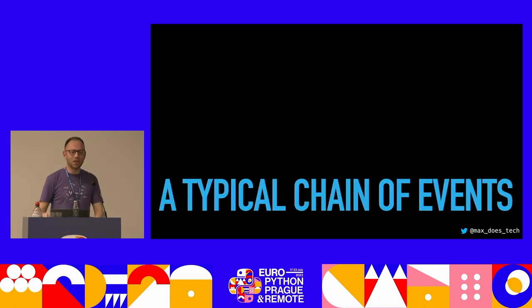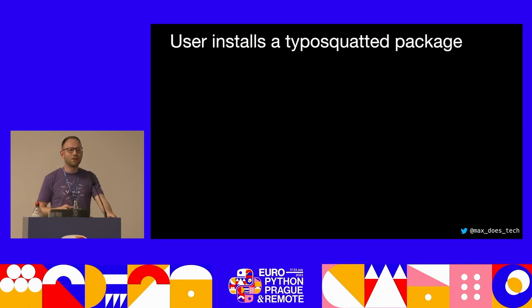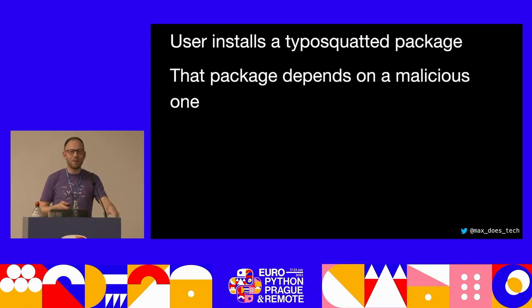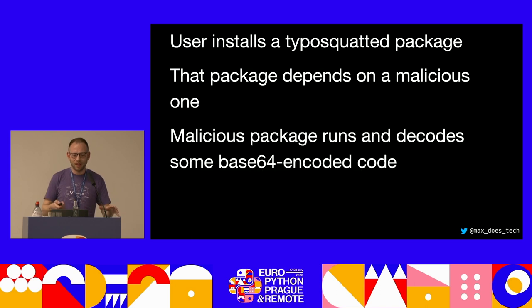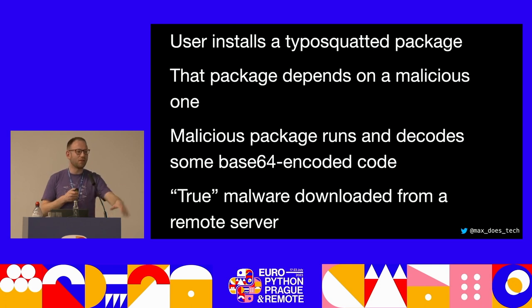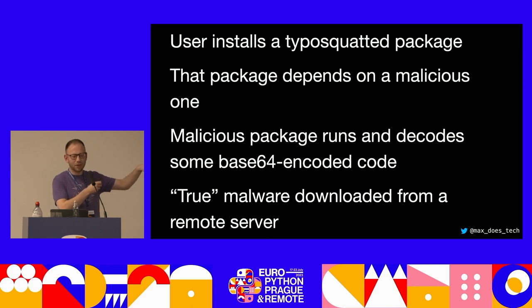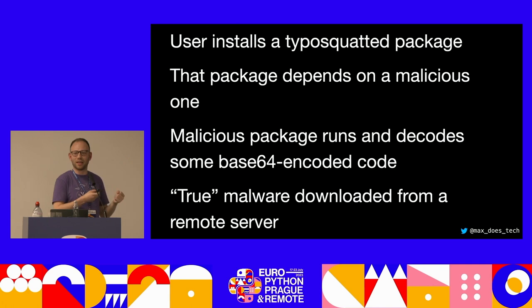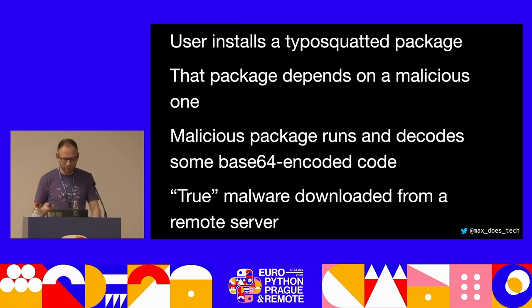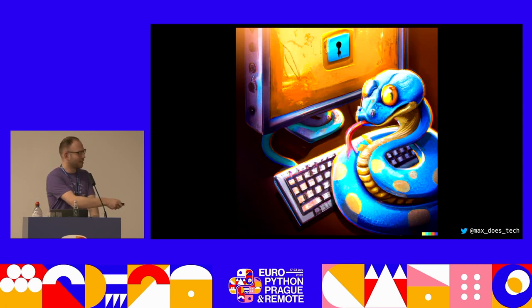A typical chain of events might go like this: the user installs a typosquatted package that depends on a malicious package. That package runs and decodes some base64-encoded code — this is usually the first stage. The second stage is that the real malware gets downloaded directly to your machine, so it doesn't need to be hidden anymore. The result is a very sad snake.